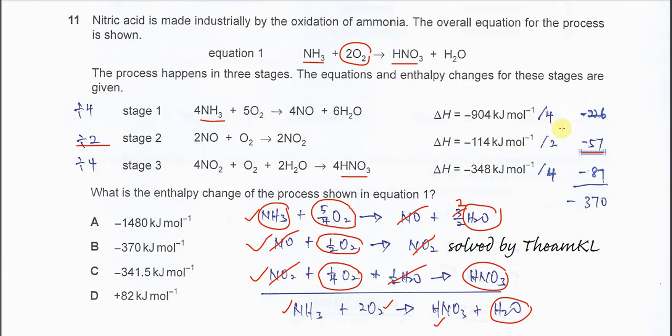After that, you need to sum up this, this, and this. That's answer B. You get negative 370. The answer is B.